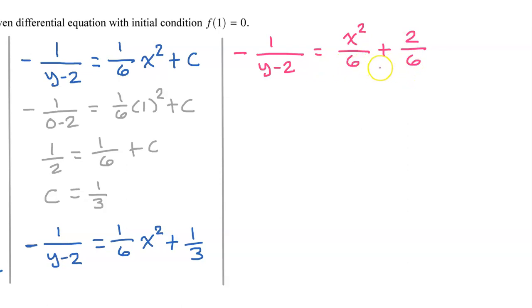Combining the two fractions into 1, we have this. On the next step, I'm going to move this negative sign down here by dividing both sides by negative 1. We're almost done. Now let's take the reciprocal of both sides of the equation.